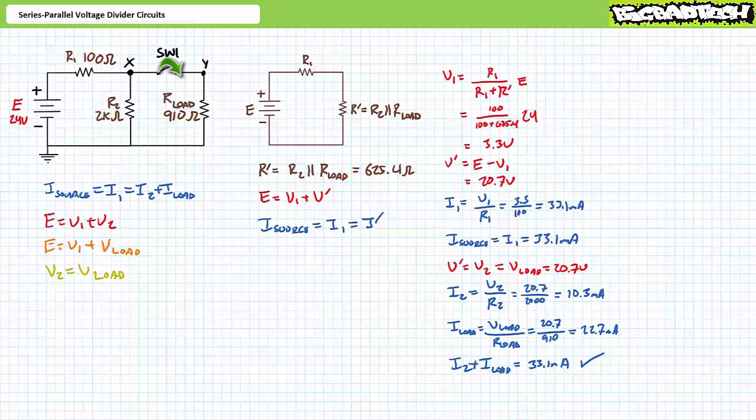In the closed state, the zero ohm switch experiences a zero volt differential. As such, Vx with respect to y will be zero volts.